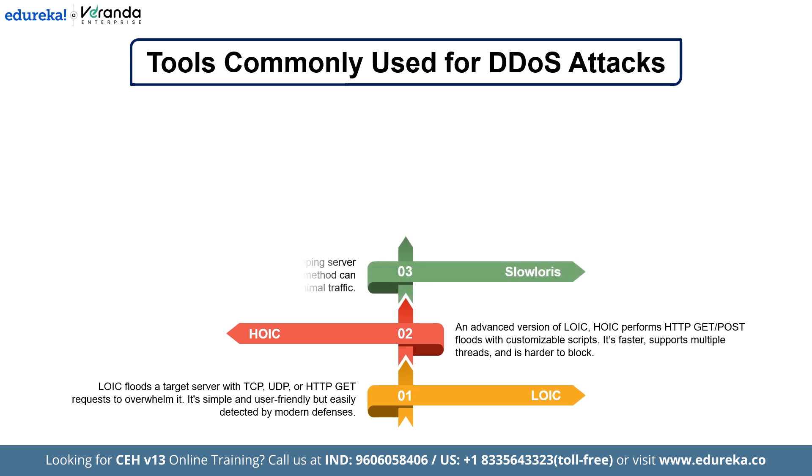The next tool is SlowLoris. SlowLoris is a highly effective DDoS tool that works very differently. Instead of flooding a server with large amounts of data, it sends small, slow, and incomplete HTTP requests. This causes the server to keep many connections open while waiting for the full request to come through. Since the server is waiting and using up its resources, it eventually becomes too overwhelmed to serve real users. This tool is particularly dangerous because it uses very little bandwidth but causes a big impact.